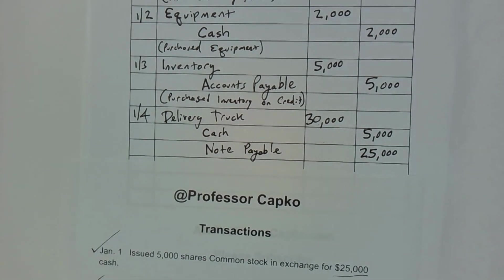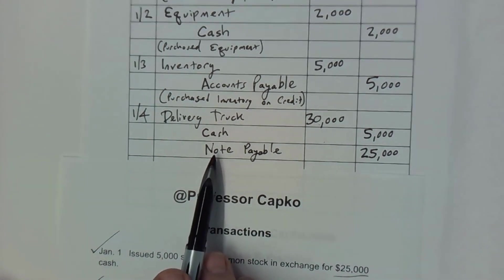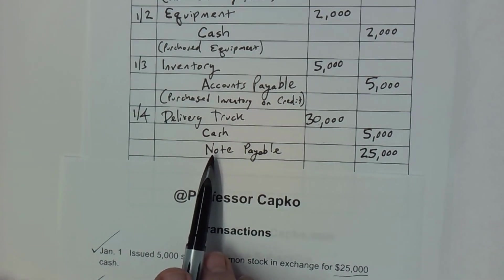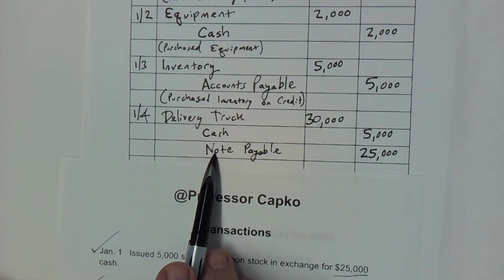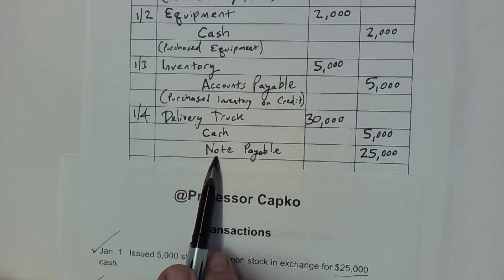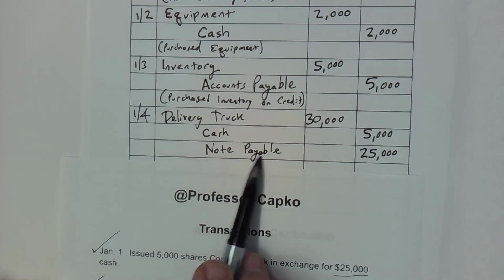Usually a long-term loan is a note, not an accounts payable. Accounts payable is more something you're going to pay in a shorter period of time. But for a longer loan, usually you would have to sign a promissory note that promises that you're going to pay that back, and that is why it's a note payable.